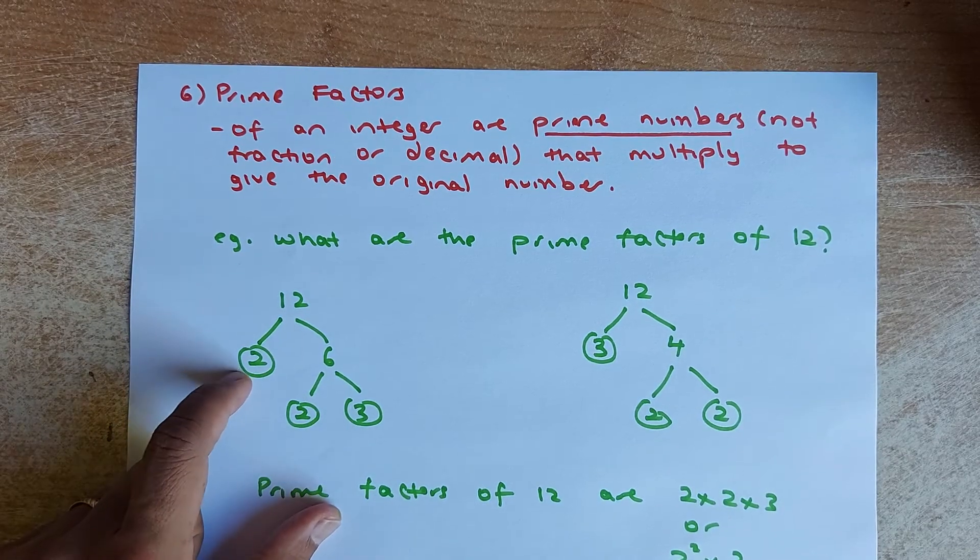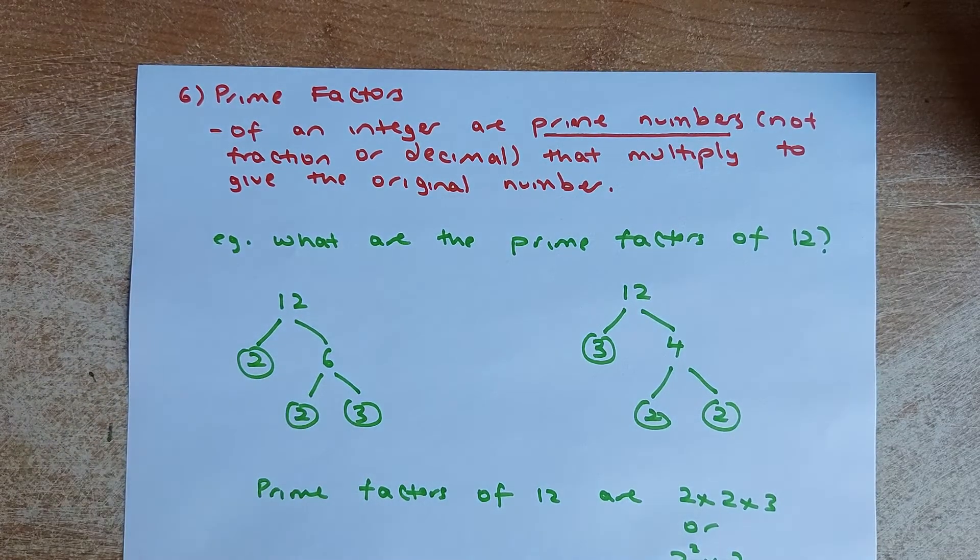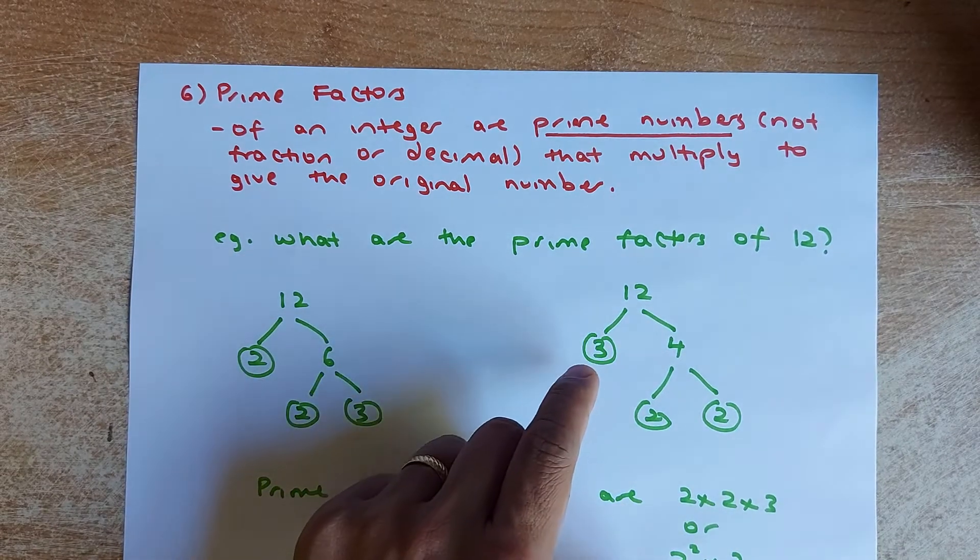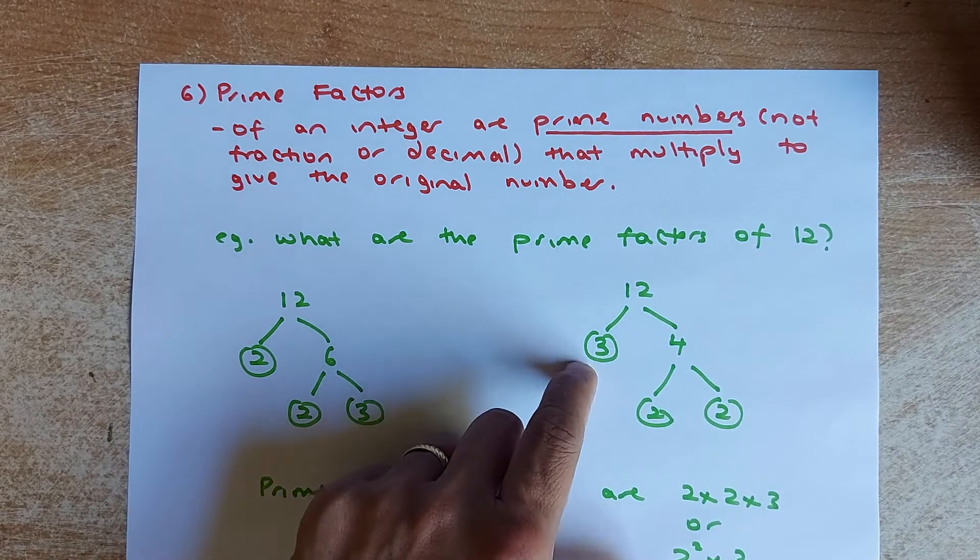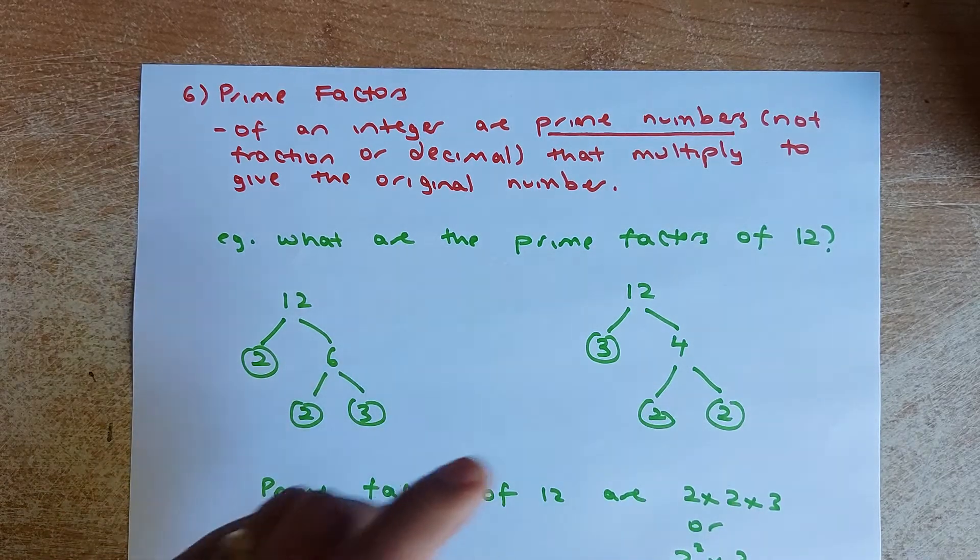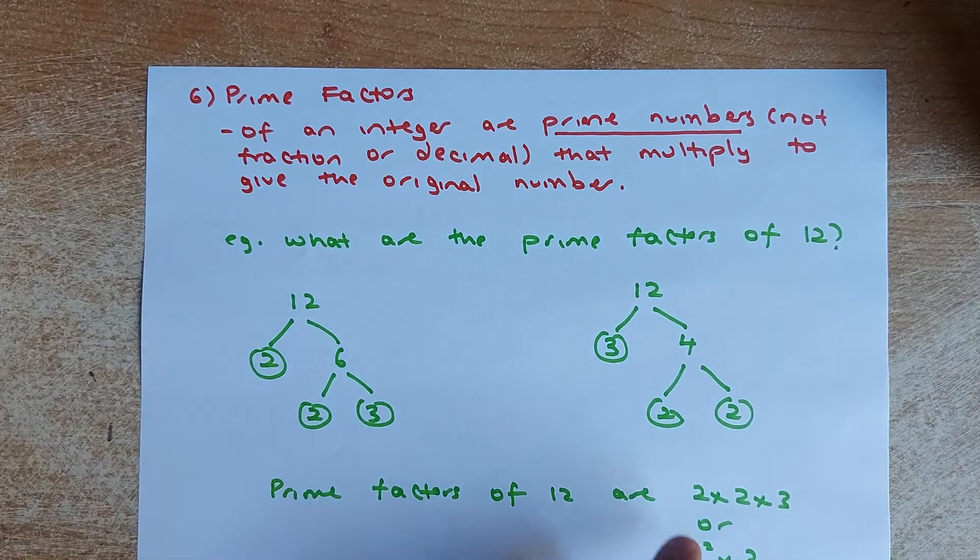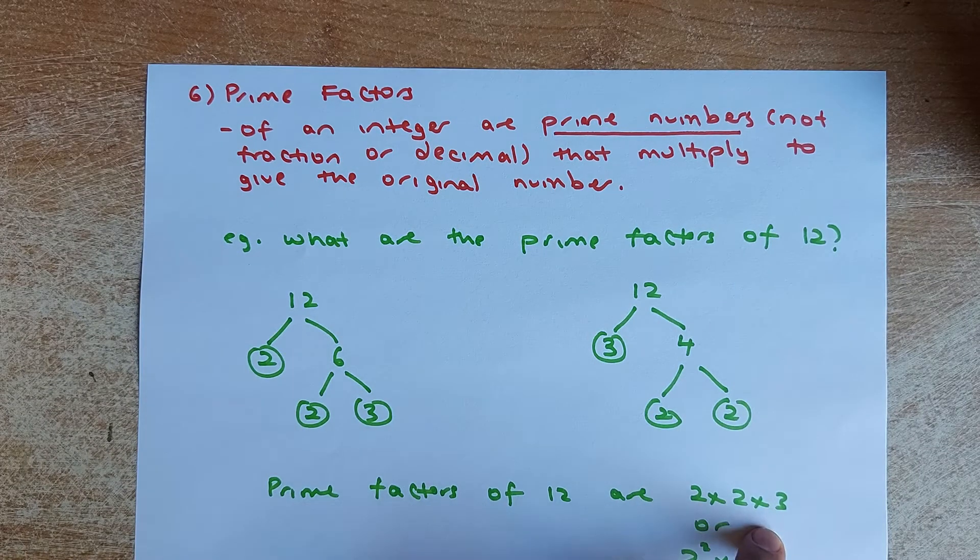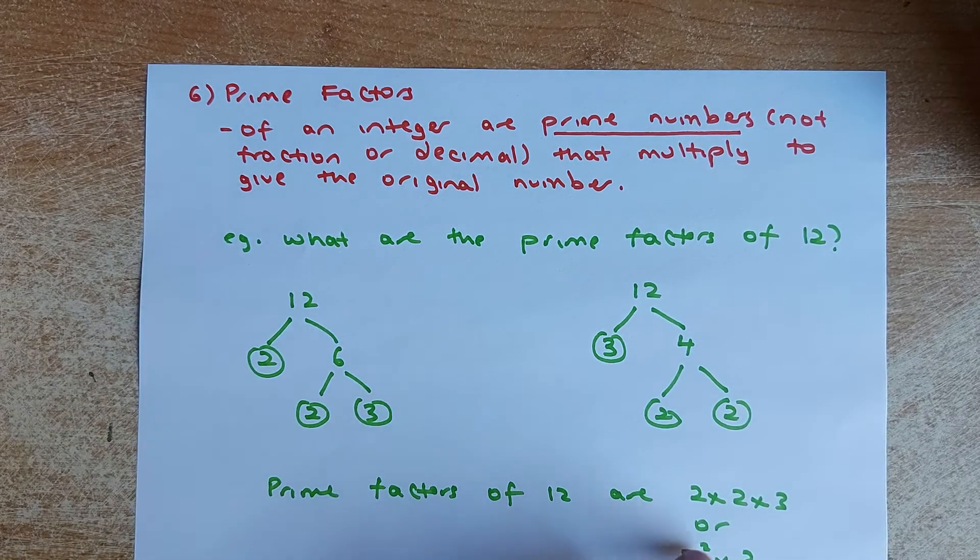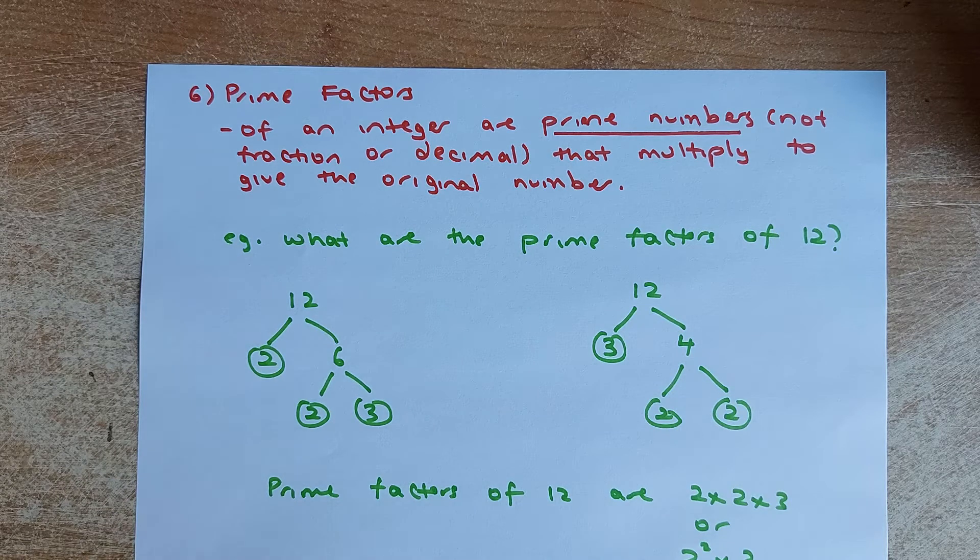So the answer is 2 times 2 times 3. Or similarly, 12 can be divided into 3 and 4. So 3 is a prime number, leave it. 4 divided into 2 and 2. So the answer is going to be 3 times 2 times 2, which is similar to this. So the answer is 2 times 2 times 3, or sometimes you can write 2 to the power 2 times 3.